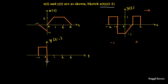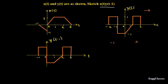It comes to minus 1 till minus 1, and it is a constant from minus 1 till 1. From 1 to 2 the shape is like this, and from 2 to 3 it is going to be a constant 1. After that I get 0. This is how the shape of the signal y(t-1) is. The limits get shifted to the right by 1 — minus 2 to plus 2 are the original limits; now they become minus 1 to 3.